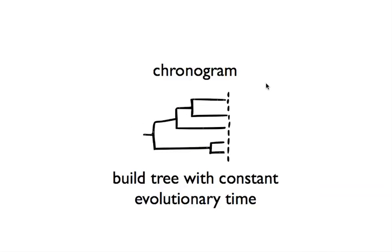A chronogram is more complex because you have to build a tree against a constant molecular clock where we're assuming all of these tips are observed at time now. And so we want to build a tree with constant molecular time. These are less commonly seen.